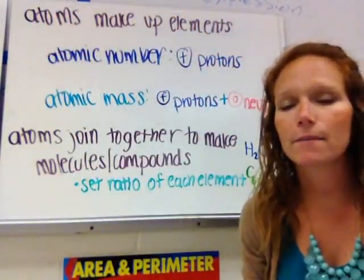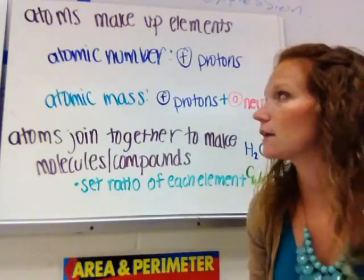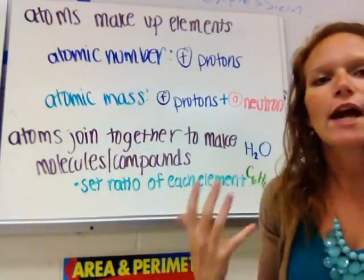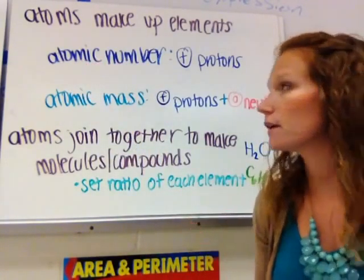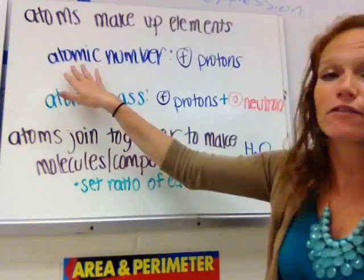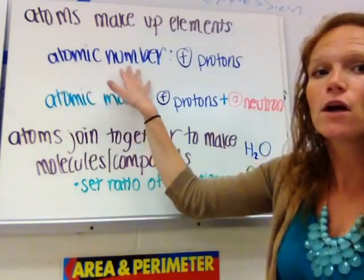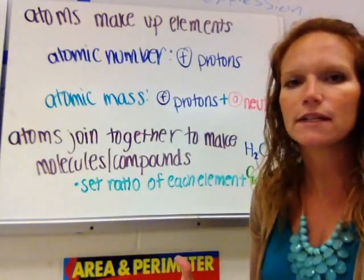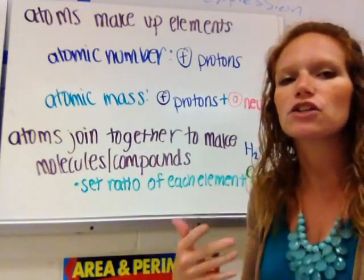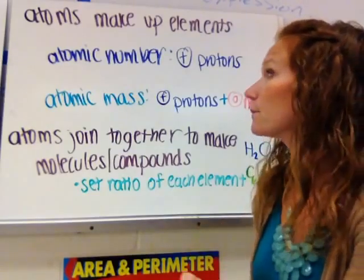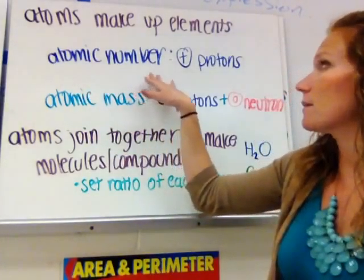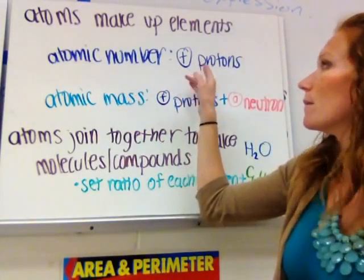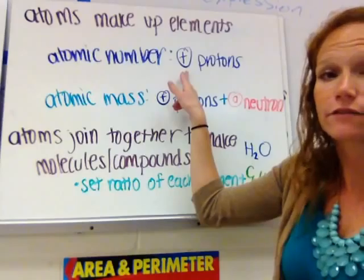Atoms make up all of the elements that we have. You can tell which element it is based on two different things. First, you have the atomic number, which is the best definition of what element it is, because each and every element has a different atomic number. The atomic number is simply the number of protons, and protons are positively charged.